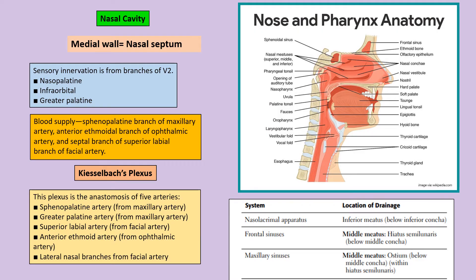The sensory innervation of the nasal cavity is from branches of V2, that is the maxillary division of the trigeminal nerve: naso-orbital, infraorbital, and the greater palatine. The blood supply is from the sphenopalatine branch of the maxillary artery, anterior ethmoidal from the ophthalmic, and the septal branch of the superior labial.